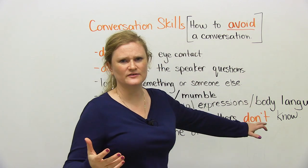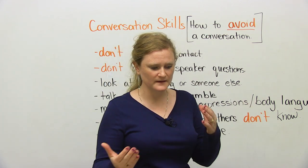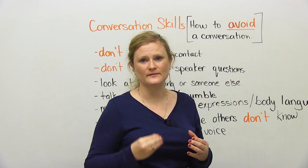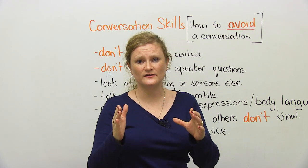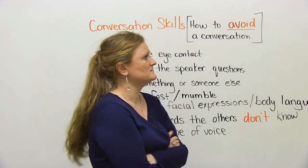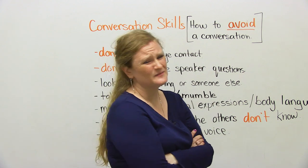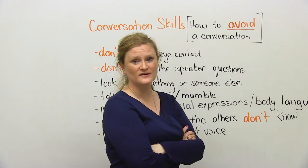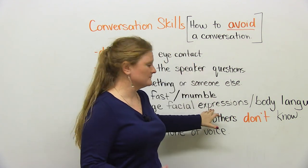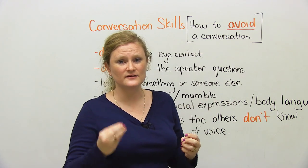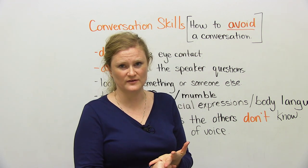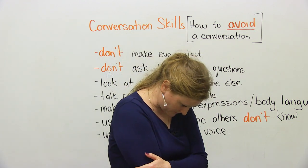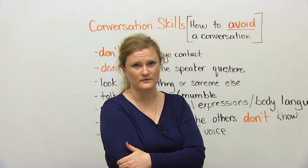The other one is body language. If you're talking to someone and you use hand expressions, it's easier for them to understand you. But if you are talking to someone and your hands are folded and you don't even look at them, they think that you don't want to talk to them. So eye contact, your facial expressions, and your body language are really important to avoid or to have a conversation with someone. If you do not want to talk to someone, fold your hands and look at the ground — they will stop talking to you. Hopefully.